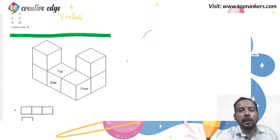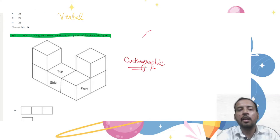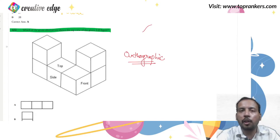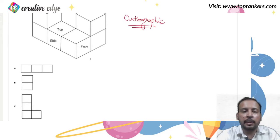Then this question is of orthographic projection. This is something new which we are seeing as compared to our previous non-verbal reasoning questions. This is a question based on orthographic projection where you will have to see the top view, the front view and the side view.